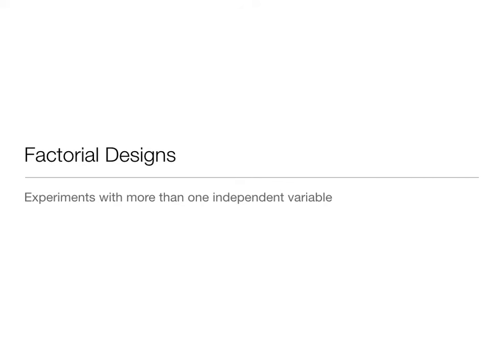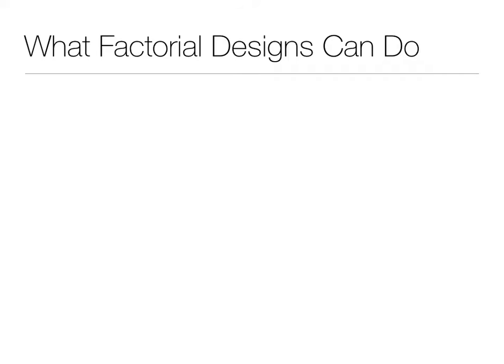Kristen Acheson here, and we are going to talk about how to describe either main effects or interactions in a factorial design. Remember, factorial design is any experiment that has more than one independent variable. When we do that, we're going to have a main effect of each independent variable, as well as interactions between those. We've already talked about how to identify whether there's a main effect or interaction, and now we're going to talk about how to describe those in words in proper APA format.